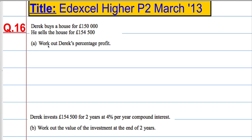In order to work out his percentage profit, I need the actual profit. The actual profit, hopefully everyone can work this part out, will be £154,500, what he sold the house for eventually, take away what he paid for the house, £150,000. And that's going to equal £4,500.